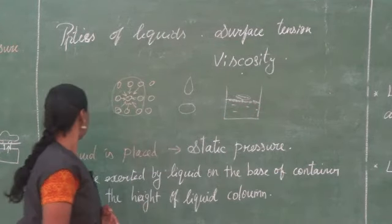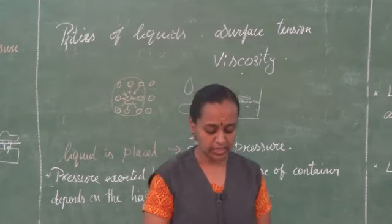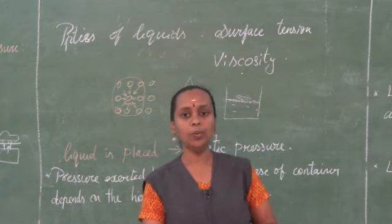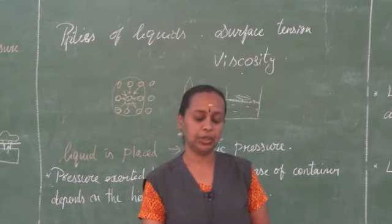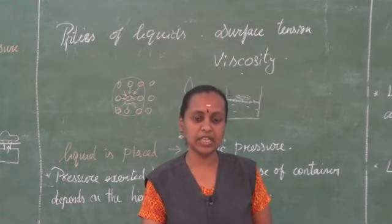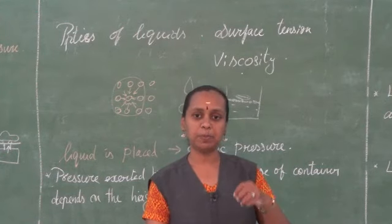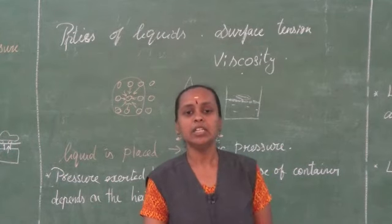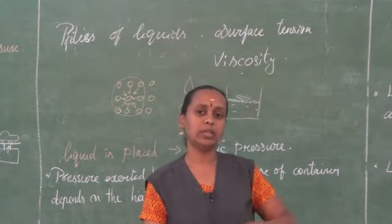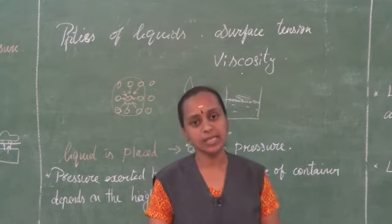Now where do we see surface tension? Tall trees have green leaves even at the top. How does water from the earth rush up to the top of the tree? Because of surface tension — the upward pulling force. The roots absorb water and the xylem vessels in the plant pull the water upward because of surface tension.